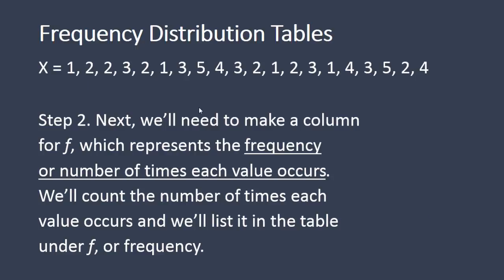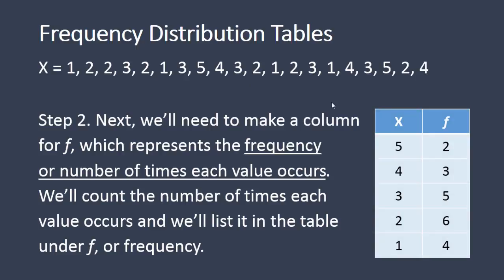So for example, notice here that we have 1, 2, 3, 4 1s in total for this variable. So we'll count the number of times each value occurs. Let's do another one. We have 3 2s, 4 2s, 5 2s, 6 2s. So assuming I've done this correctly, I saw 4 1s and 6 2s.